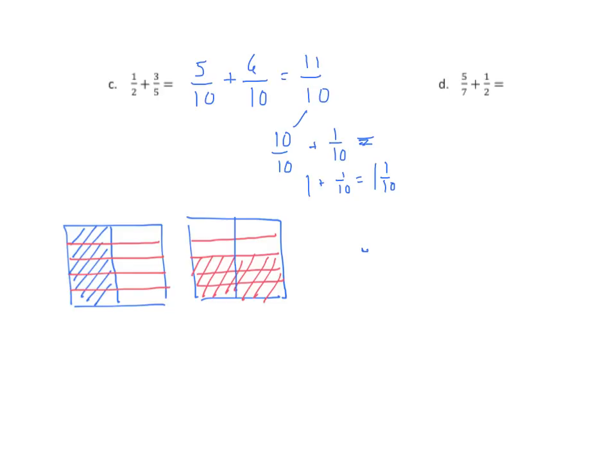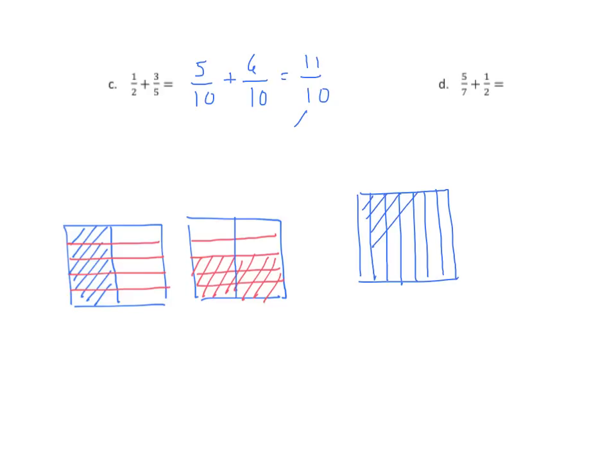Let's do the next example. Once again, we're going to create a pair of rectangular models to represent each one of these addends. Five sevenths. We're going to represent that by creating that rectangle and making six vertical lines, partitioning it into seven equal parts. And since the numerator is five, we're going to shade in five out of the seven partitions.